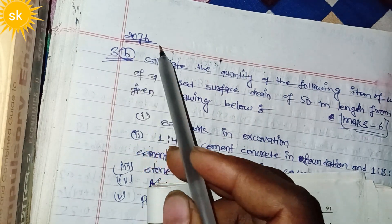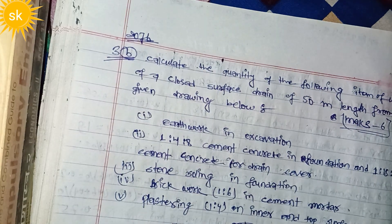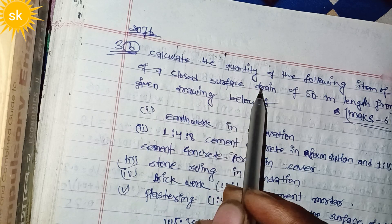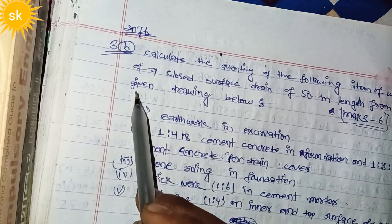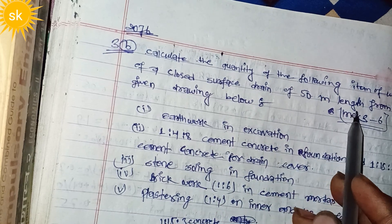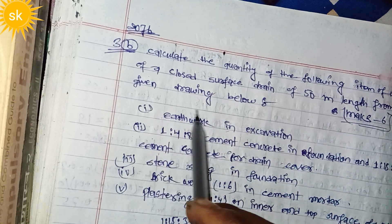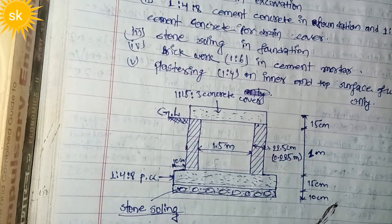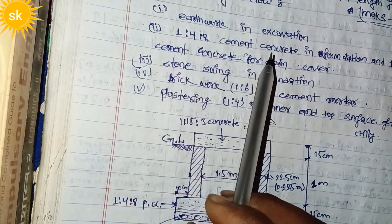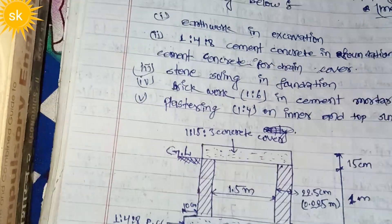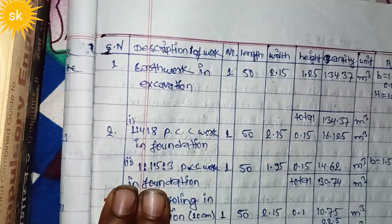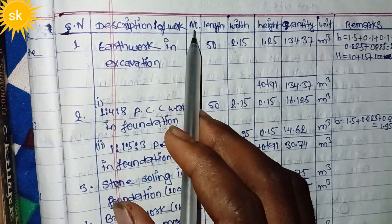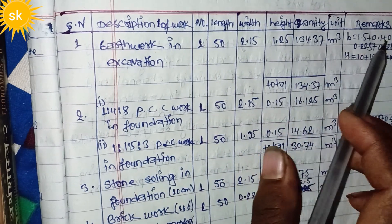Day 207. Calculate the quantity of the following items of work of a closed surface drain of 50 meter length. From the given drawing below, you are working in a table format. The table has columns for description of work, number, length, width, height, quantity, and unit marks.